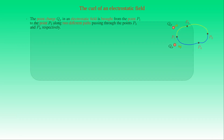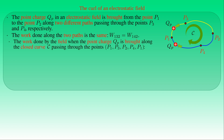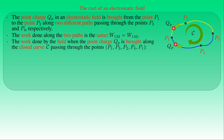Suppose the test charge QP is brought from point P1 to point P2 along two different paths crossing points P3 and P4 respectively. Since the electrostatic force is conservative, the work done along both paths is the same. The test charge can also be brought along a closed path starting at P1, passing through P3, P2, and P4, and finishing at P1. The total work along the closed path is the sum of work along the path P1→P3→P2 and the path P2→P4→P1. The latter equals minus the work along P1→P4→P2, which equals the work along P1→P3→P2. As a result, the total work done by the conservative force along the closed path vanishes.